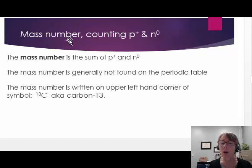The mass number is the sum of the protons and neutrons in a nucleus. Unlike the atomic number, the mass number is not generally found on the periodic table. Usually, the mass number must be given to you. When the mass number is important to know, it is written in the upper left-hand corner of the elemental symbol. The name is written as the element name, followed by a hyphen and the mass number. This symbol of carbon with a mass number of 13 is called carbon-13.